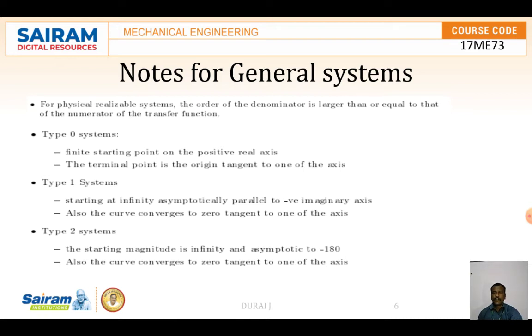The notes for the general system - for physical realizable systems, the order of denominator is larger than or equal to that of the numerator of the transfer function. This is the point we should remember. Type 0 system: finite starting point on the positive real axis. It will start from the real axis and the terminal point is the origin tangent to one of the axes. Type 1 system: starting at infinity, asymptotically parallel to negative imaginary axis. Also, the curve converges to 0 tangent to one of the axes.